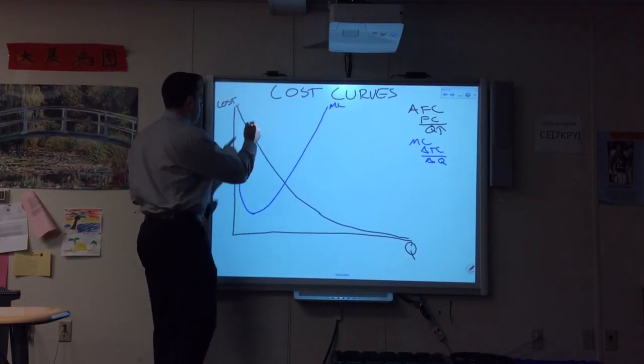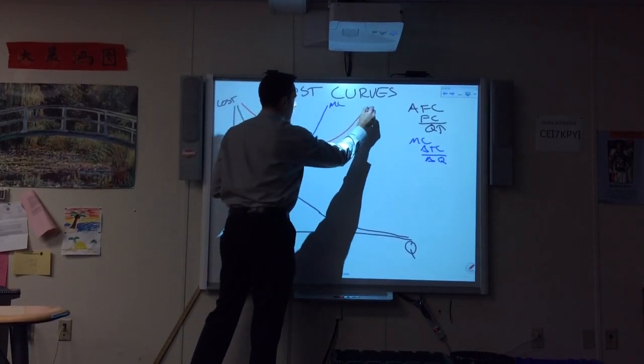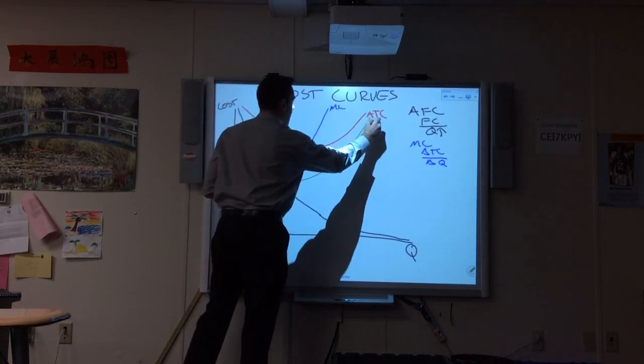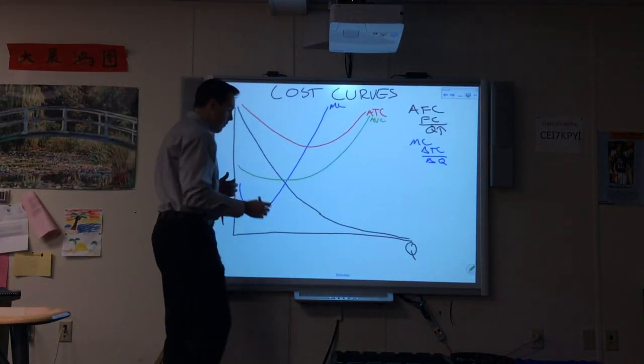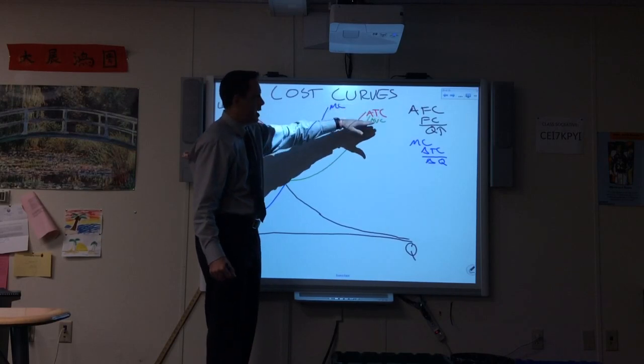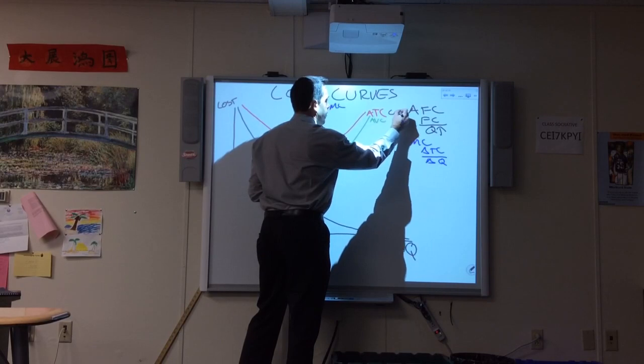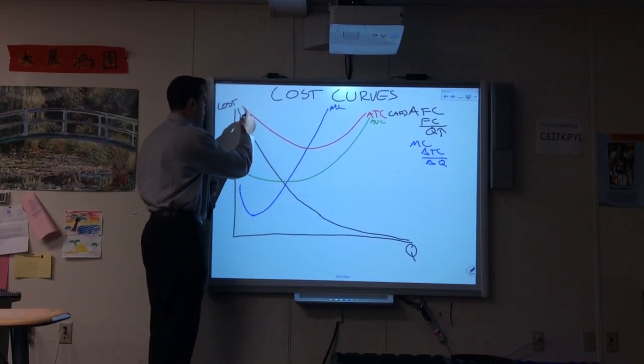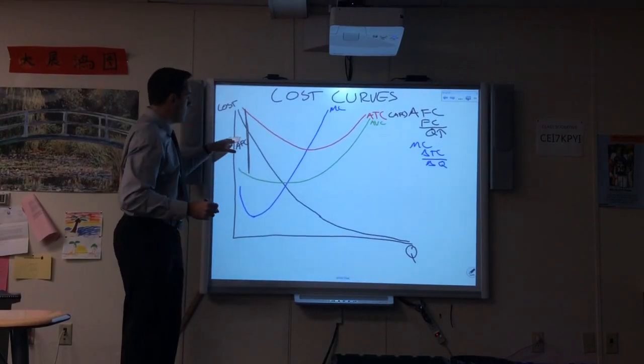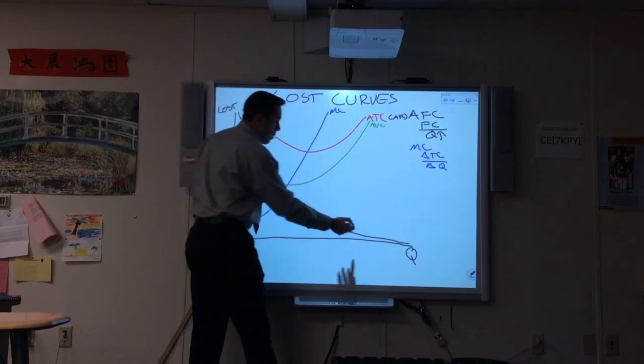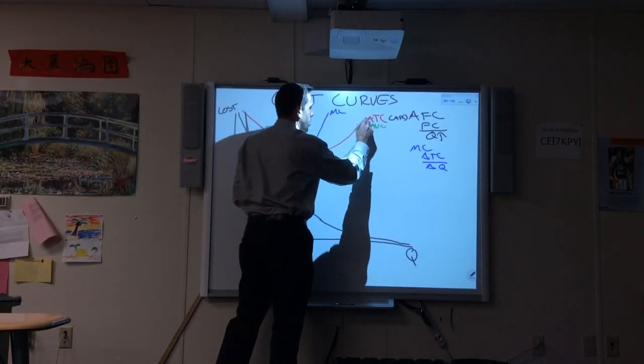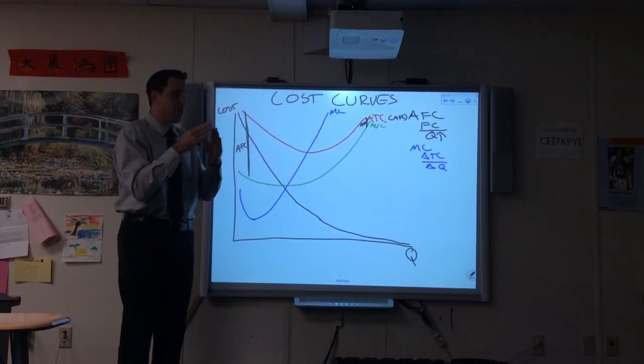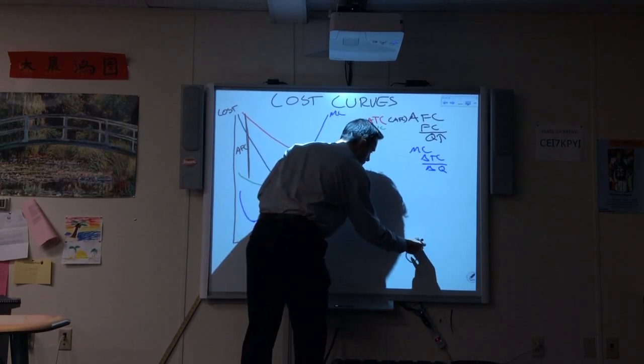The next two curves I'm going to draw together, one right after the other. The difference between the two is that average total cost has average fixed cost, which average variable cost doesn't have. When average fixed cost is high, the gap between average total cost and average variable cost is great. When average fixed cost is small and approaching zero, the gap between average total cost and average variable cost is narrowing. Average total cost and average variable cost will never touch because average fixed cost will never hit zero.